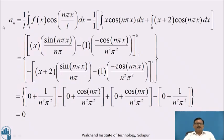Now we will calculate aₙ. aₙ = (1/L) ∫₋ₗᴸ f(x) cos(nπx/L) dx = ∫₋₁⁰ x cos(nπx) dx + ∫₀¹ (x+2) cos(nπx) dx. For the first integral, using integration by parts with u = x, v = cos(nπx): keep x, integrate cos(nπx) = sin(nπx)/(nπ), minus derivative of x times integral of sin(nπx)/(nπ) = -cos(nπx)/(n²π²), with limit -1 to 0.